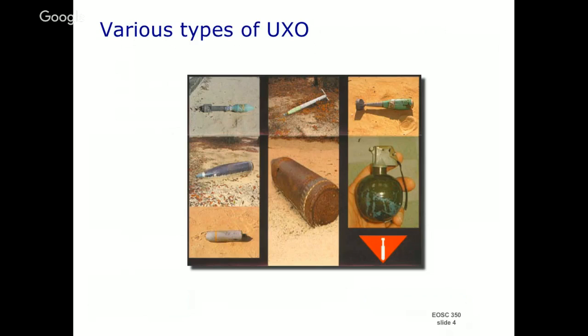Remember when the US was bombing Afghanistan and they dropped carpet bombs with all these little bomblets? There are millions of these. If you go to Laos or Cambodia, there are just so many millions of explosives that have been dropped. Even if 90% exploded, that still leaves 10%, which is a huge number. They can take a whole bunch of different shapes and forms.